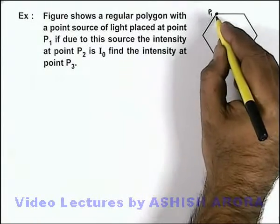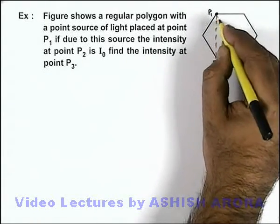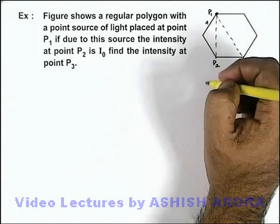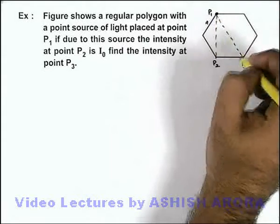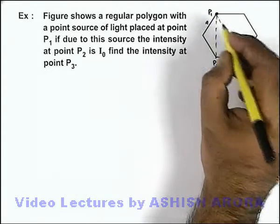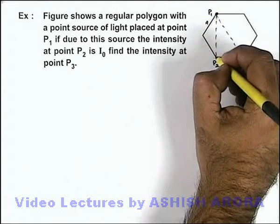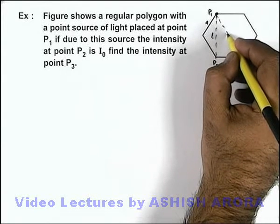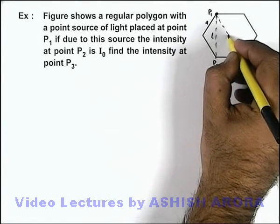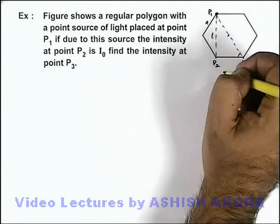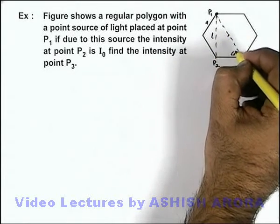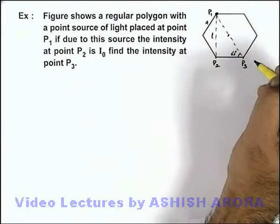In this situation, we can see if the polygon is regular with edge length a, then we can relate these distances. If distance from P1 to P2 is l, certainly we can find out the angle. The line P1P3 is making an angle 60 degrees with the line P2P3.